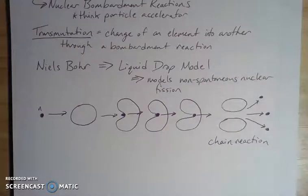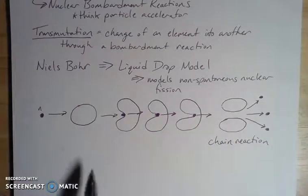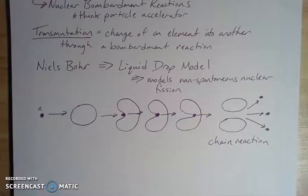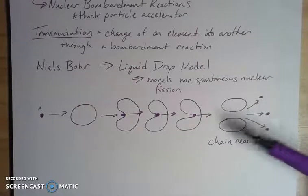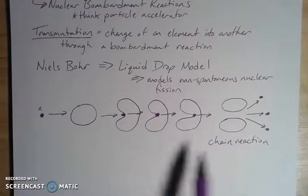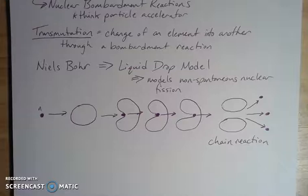So that's Niels Bohr and the liquid drop model. This is the idea with transmutation. So I started with something with a certain amount of protons here, maybe uranium with 92 protons. Now I have two smaller things that are probably not exact perfect halves, but a split to more stable configurations. This thing is going to split in such a way that we have two lower energy halves compared to what I started with. So that's transmutation.